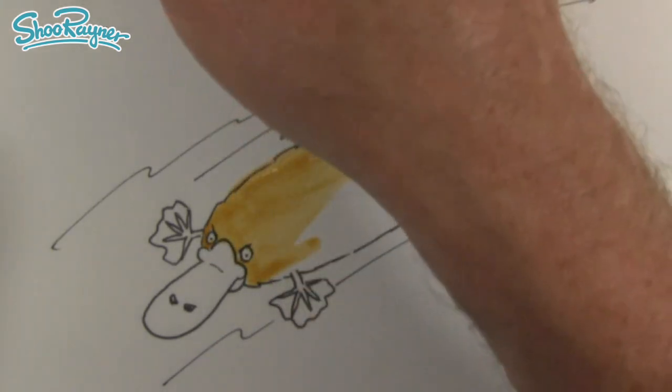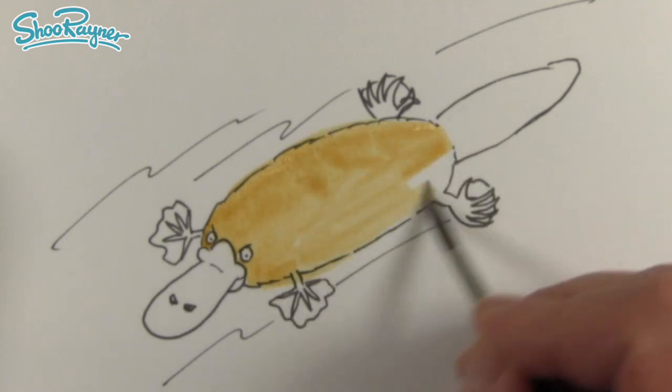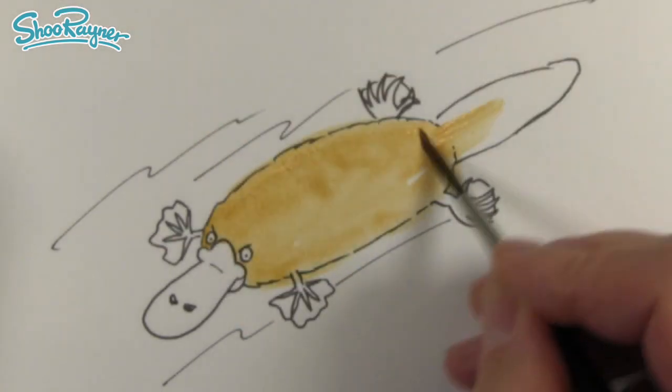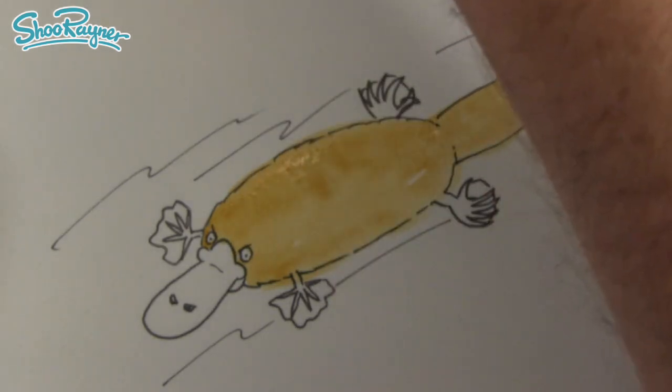I'm just going to paint this body a kind of an ochre color, it's a yellowy brown ochre which is a kind of name that comes from rocks. You crush rocks to make ochre.